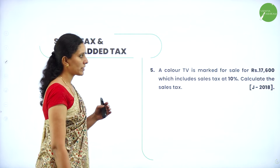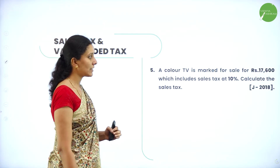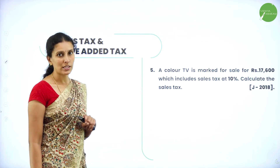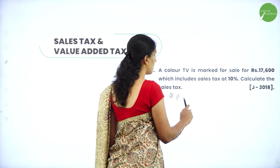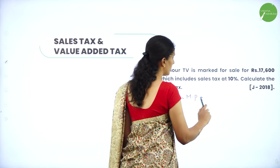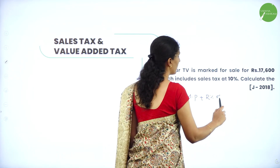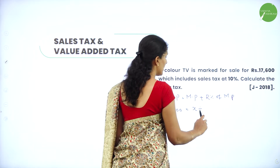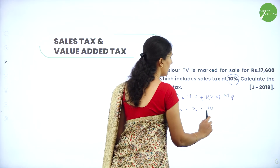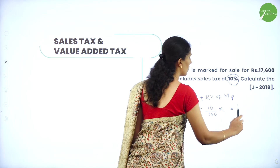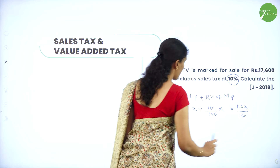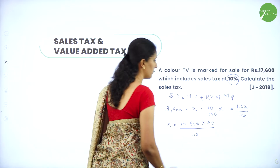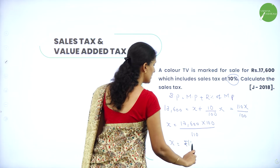Next question: a TV is marked for sale for rupees 17,600 which includes sales tax at 10 percent. Calculate the sales tax. First find the market price. Selling price equals market price plus rate of sales tax percent of market price. So 17,600 equals x plus 10 divided by 100 into x, giving 110x divided by 100. Therefore x equals 17,600 into 100 divided by 110, which gives rupees 16,000.